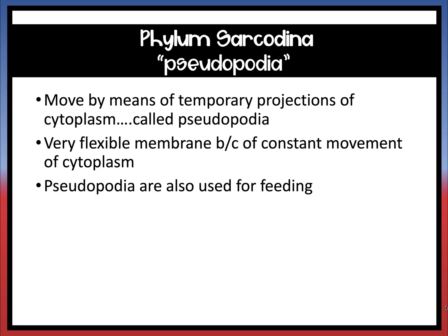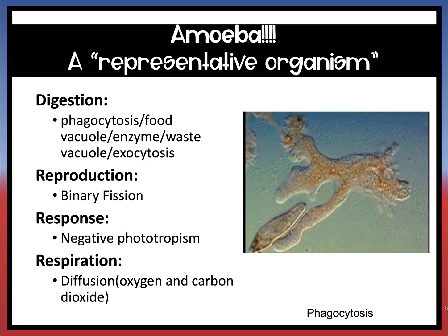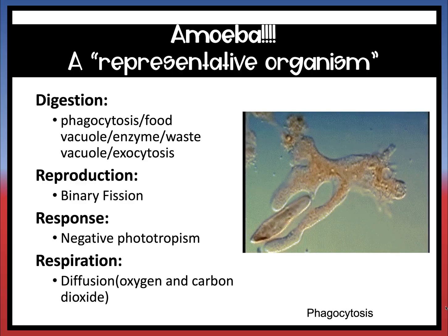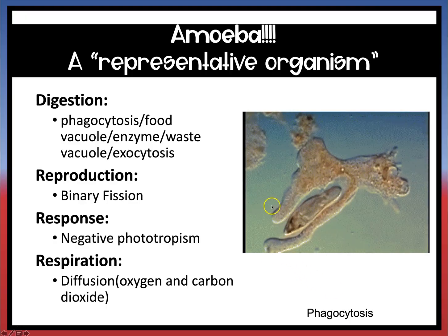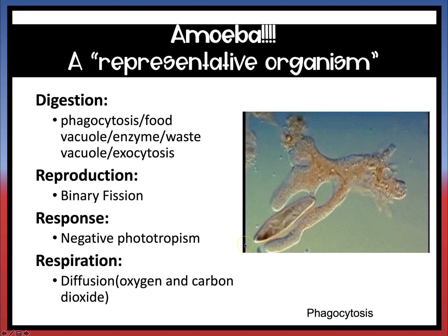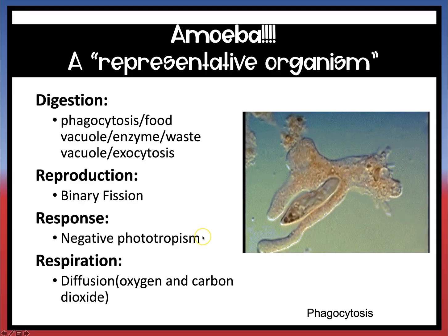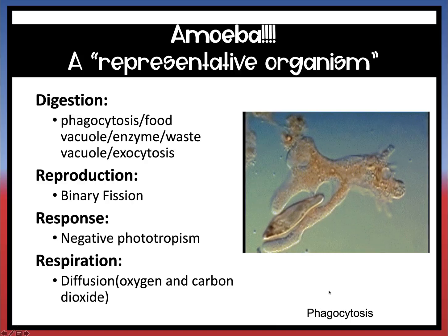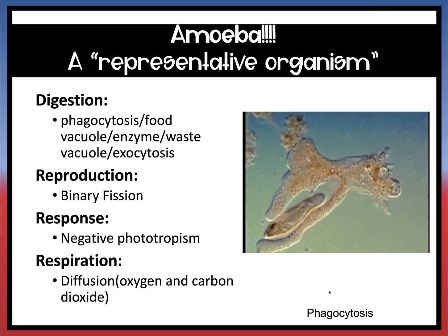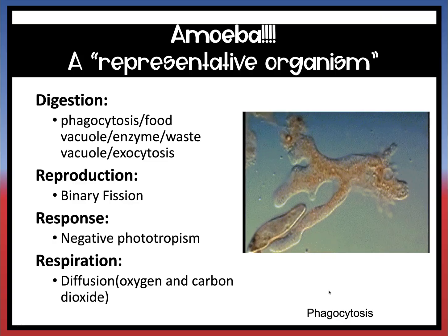The next phylum is phylum Sarcodina, which moves via pseudopodia. They move by a temporary projection of cytoplasm called pseudopods, or 'fake feet.' They are very flexible because their cytoplasm is constantly moving, and they also use pseudopods for feeding. You can see in the animated image that the pseudopods trap food — they get around their food source and trap it using pseudopods. This is called phagocytosis, which we discussed as a form of active transport. The representative organism is the amoeba.